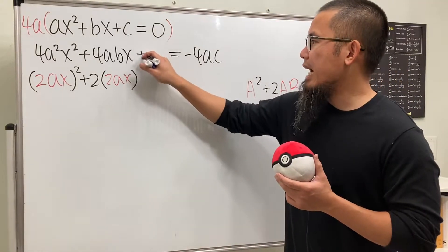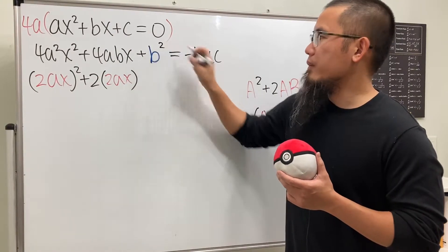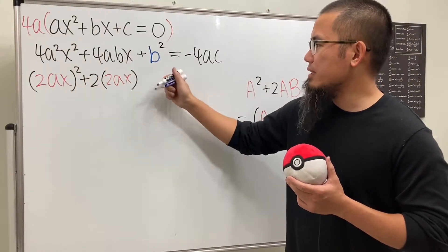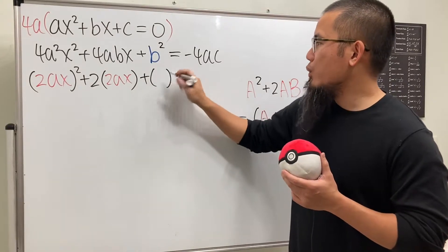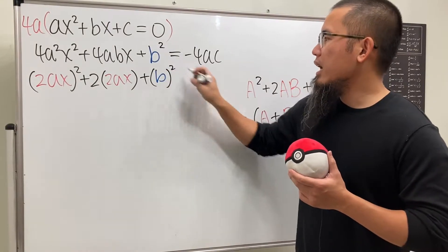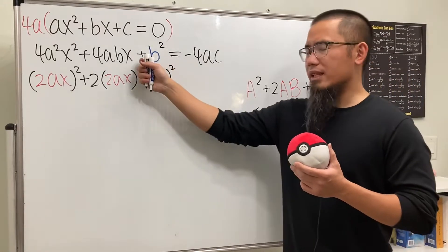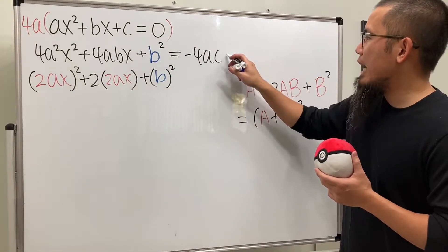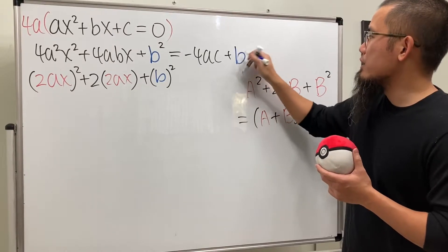We will have to go ahead and add b². So that we can produce that. And then again, let me just write this down. We plus b². And of course, whatever we do on the left-hand side, we do the same thing to the right-hand side as well. So we will just have to add b² here as well.